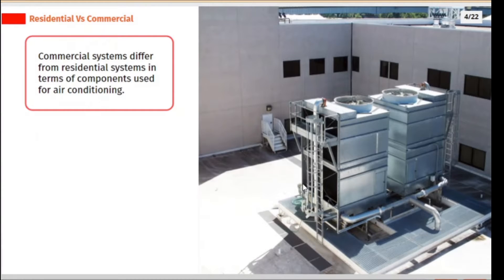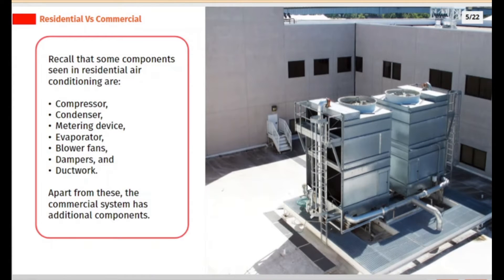Commercial systems differ from residential systems in terms of components used for air conditioning. Recall that some components seen in residential air conditioning are: compressor, condenser, metering device, evaporator, blower fans, dampers, and ductwork.